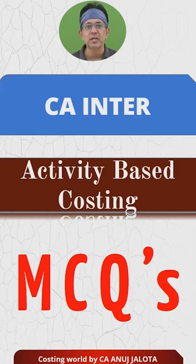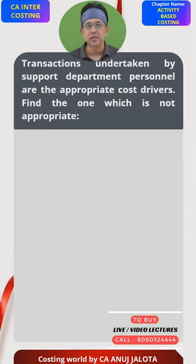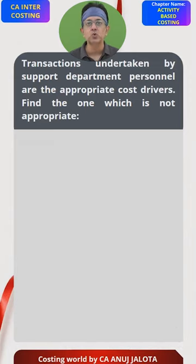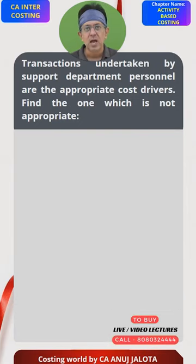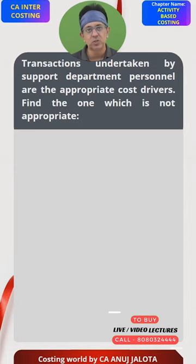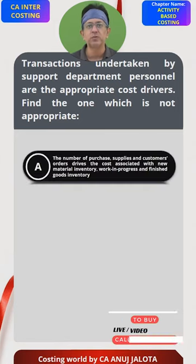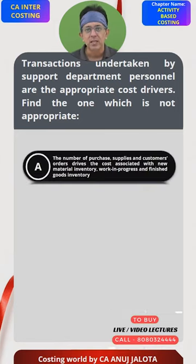CA Inter Activity Based Costing MCQs. Transactions undertaken by support department — the personal department, which takes care of the people — are the appropriate cost drivers. This line is proper. Find which one is not appropriate. They have given one example which is proper: transactions undertaken by support department personal are the correct cost drivers. Find which one is not appropriate.